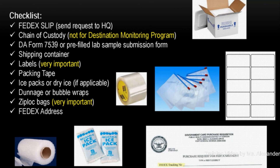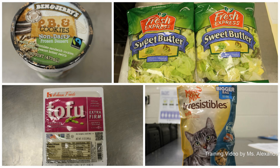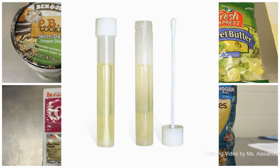Here is a list of things that you may or may not need in order to submit your samples. For example, the FIDICS request form or the chain of custody, depending on the reason for submission. Here are a few examples of samples you may submit to the lab. In addition to frozen, chilled, and dry food items, you may also send swabs from the processing area in your commissary.